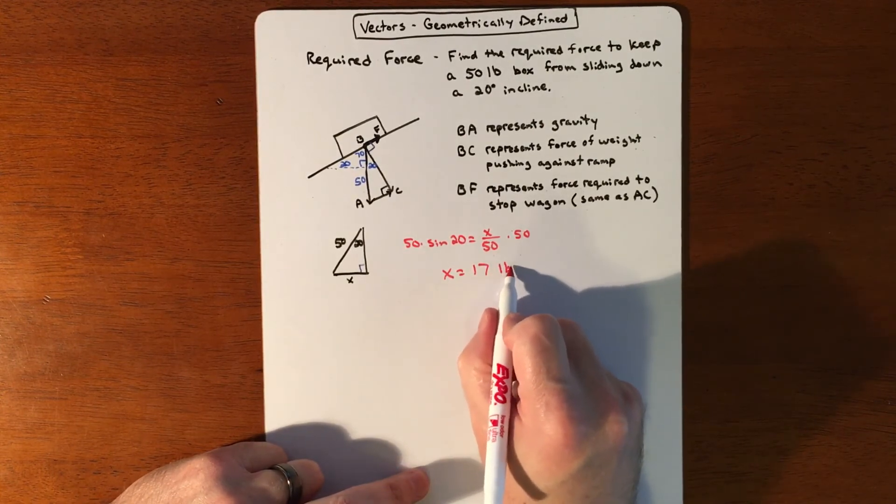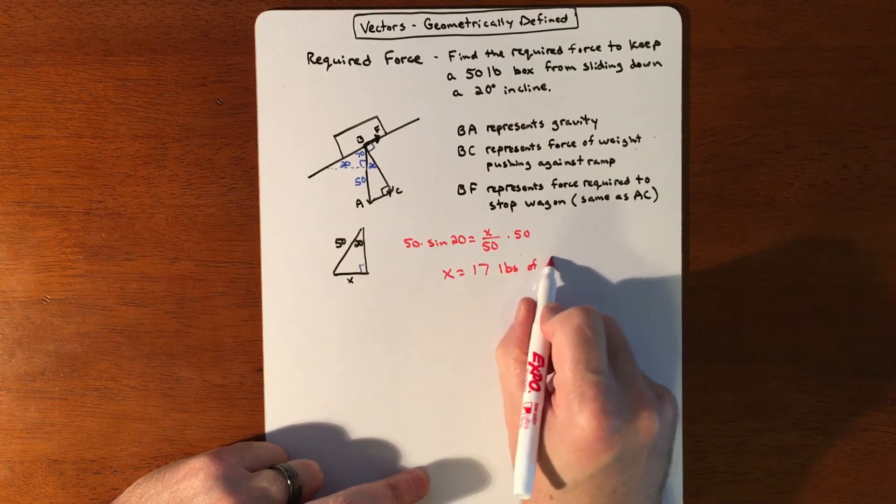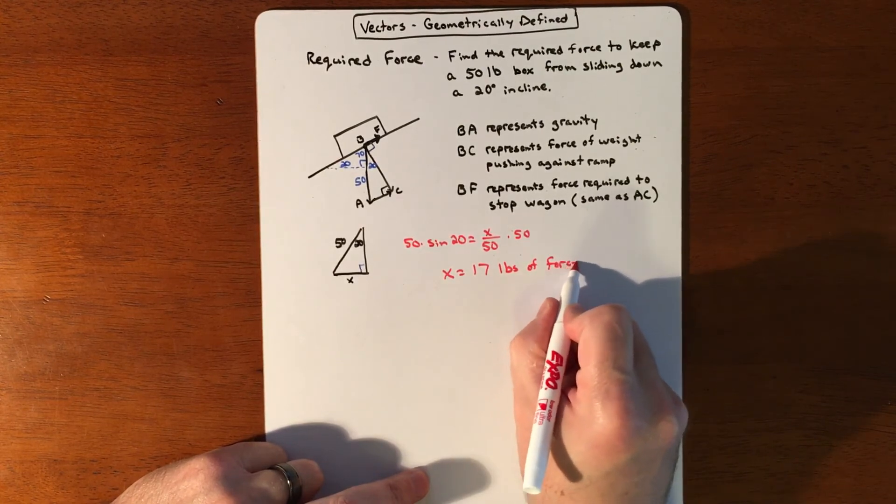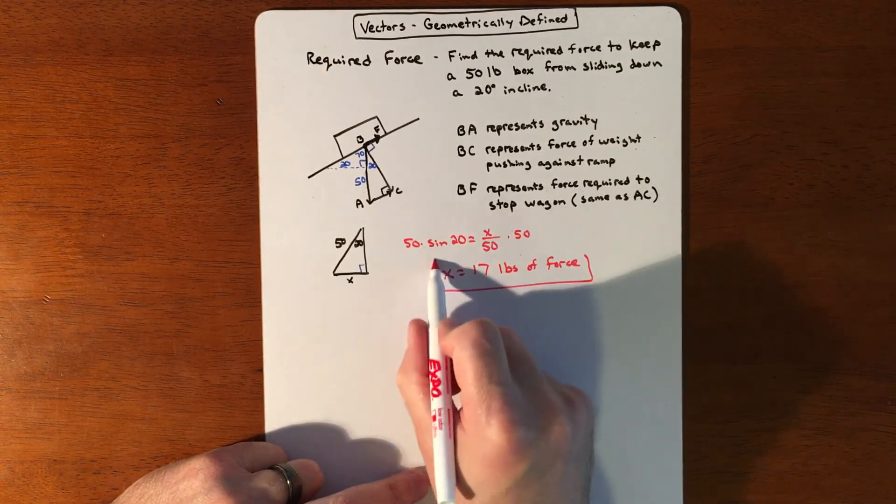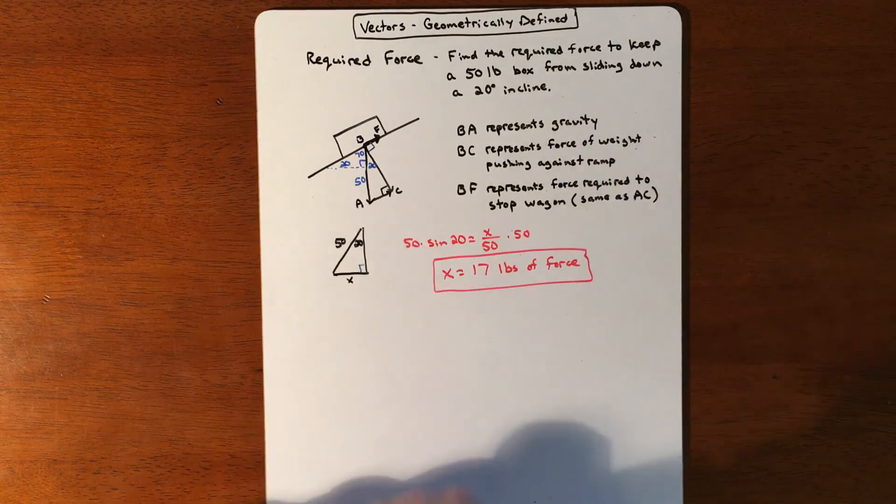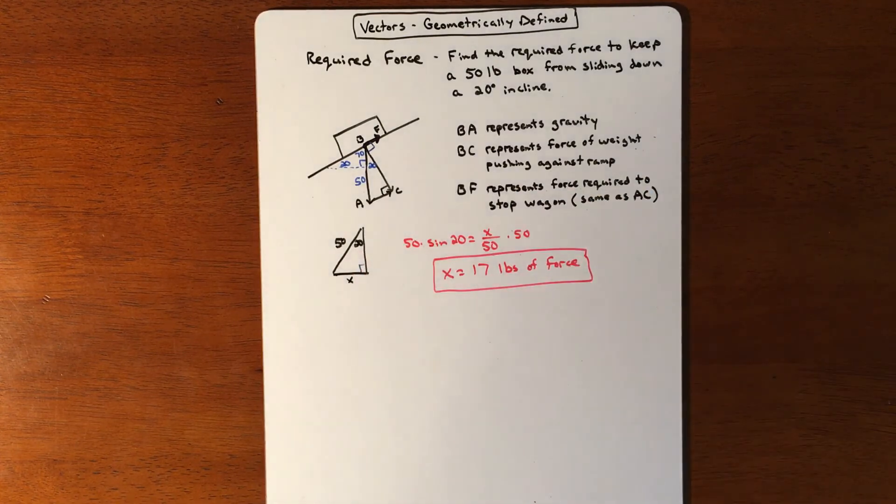So that would be 17 pounds of force needed to stop it. Obviously, the steeper the slant, the more force you would need; the less the slant, the less force you would need. But for this instance, we're looking at about 17 pounds of force to stop it from sliding down the hill.